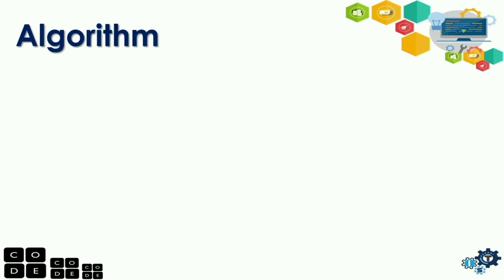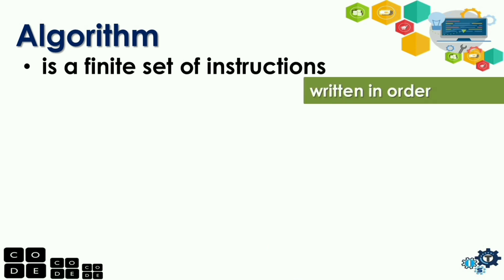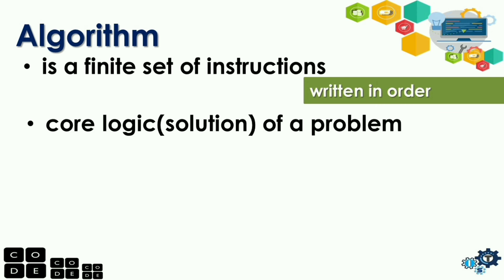The next we're going to have algorithm. It is a finite set of instructions. So, these are written in order. So, if we're talking about instruction, para maintindihan yun ng isang tao or isang computer, it must be written in order. Algorithm is not a program. It is a core logic or a solution of a problem. So, we have two types of algorithm.